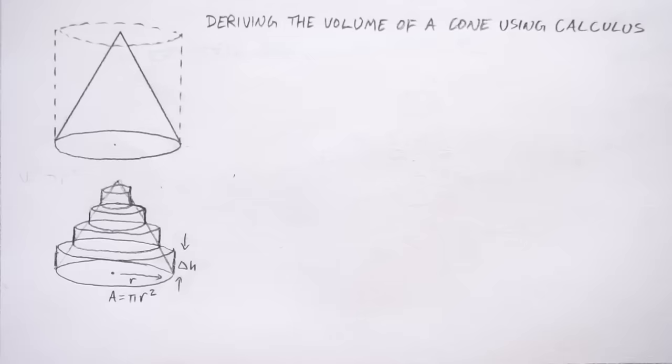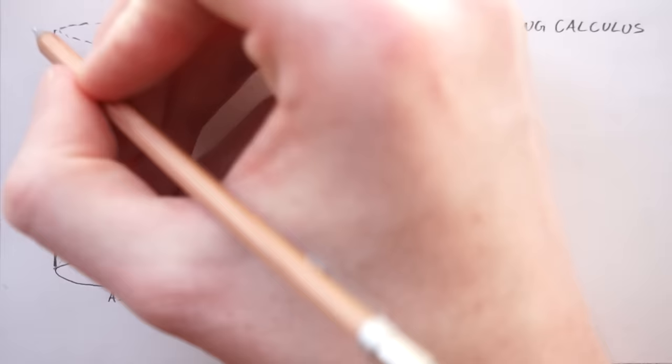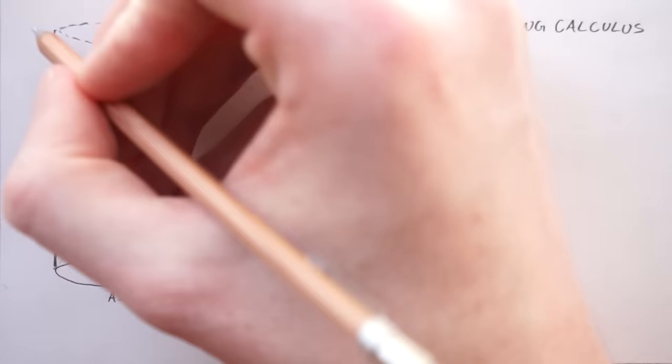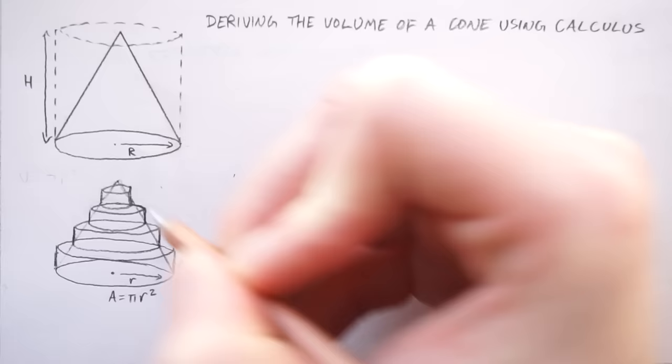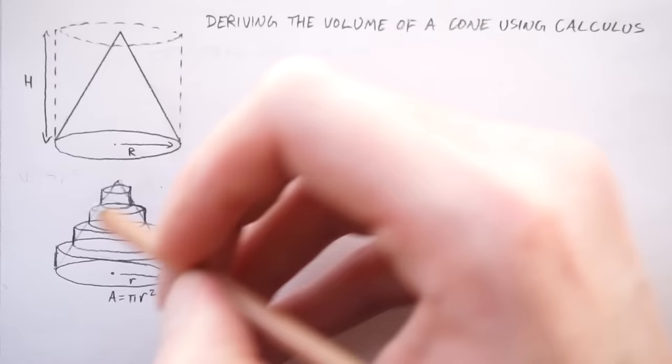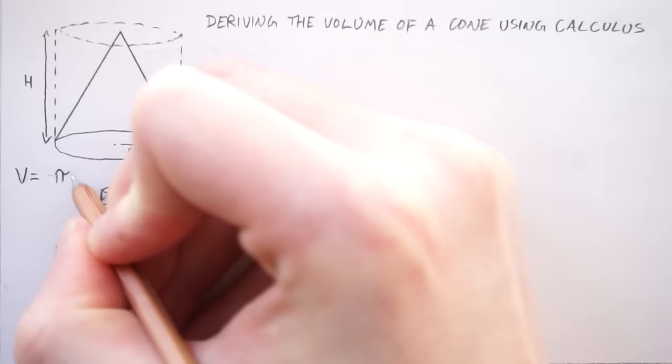So a good thing to do at the beginning is just to try and get a bit of an intuition, a bit of a guess as to what this volume of this cone is going to be. We can start off with the volume of this enclosing cylinder. So I'm going to set just some constants. So say it's got a height of big H and the base has got a radius of big R. Then the volume of the enclosing cylinder is going to be V equals pi R squared times H.